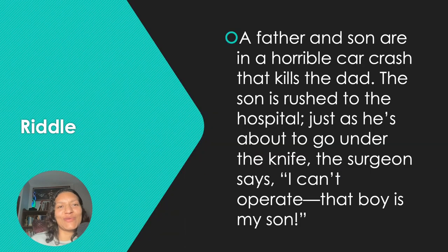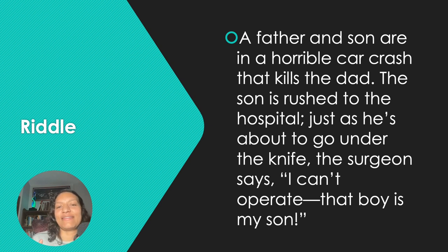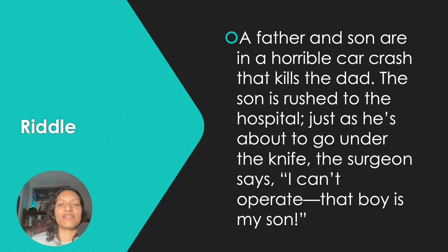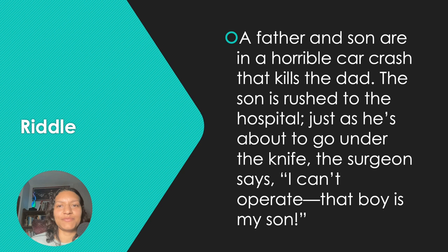Here's a fun little riddle — see if you can figure this out. Pause the video if you need to. A father and son are in a horrible car crash that kills the dad. The son is rushed to the hospital, and just as he's about to go under for surgery, the surgeon says, 'I can't operate — that's my son.' How is that possible?